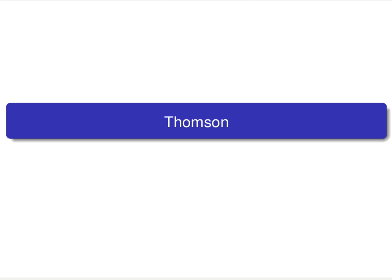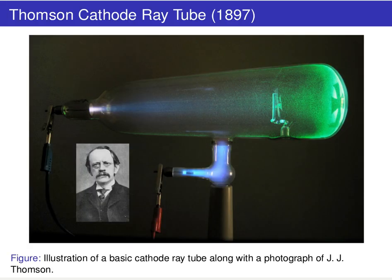As many of you know, atoms are not indivisible — they do have a substructure. One of the first scientists to talk about that substructure was J.J. Thomson, who came up with a clever plan for understanding atomic structure using a device called a cathode ray tube.